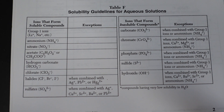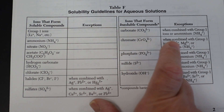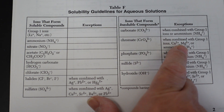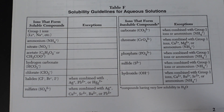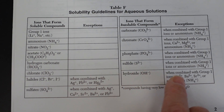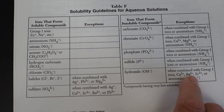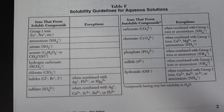Some of them have additional exceptions. For example, chromate is typically insoluble, but calcium chromate is soluble. Magnesium chromate is also soluble. Hydroxide has even more exceptions: calcium hydroxide is soluble, barium hydroxide is soluble, and strontium hydroxide is soluble.